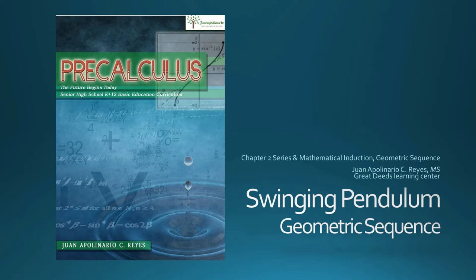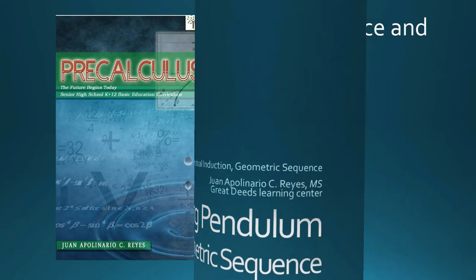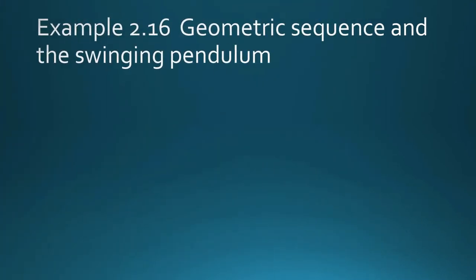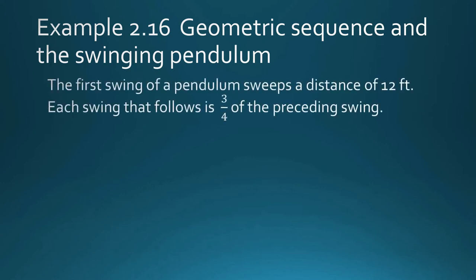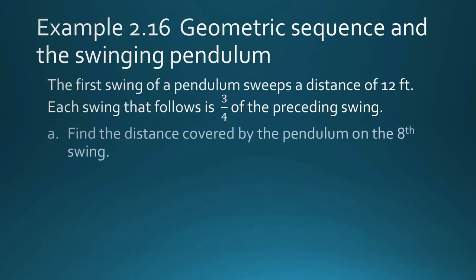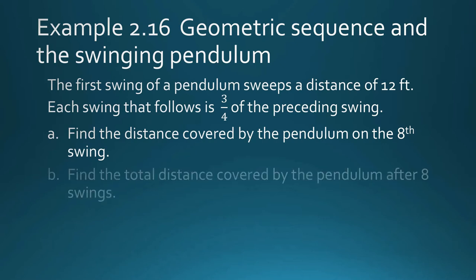This is a Swinging Pendulum Problem. Example 2.16: Geometric Sequence and the Swinging Pendulum Problem. The first swing of a pendulum sweeps a distance of 12 feet. Each swing that follows is 3 fourths of the preceding swing. Find the distance covered by the pendulum on the 8th swing. Find the total distance covered by the pendulum after 8 swings.